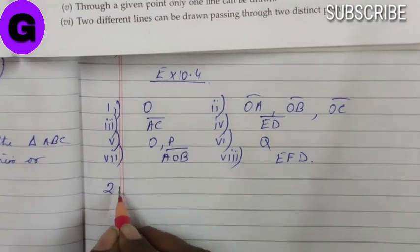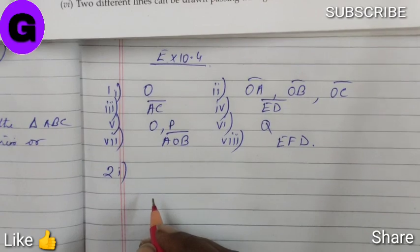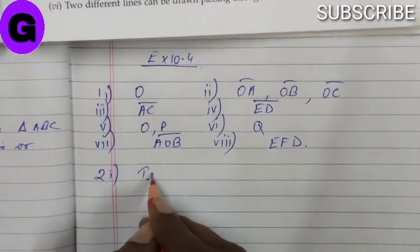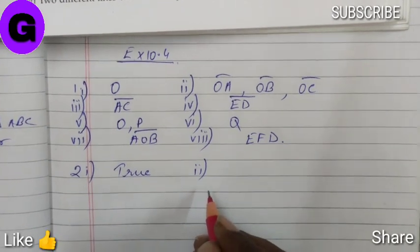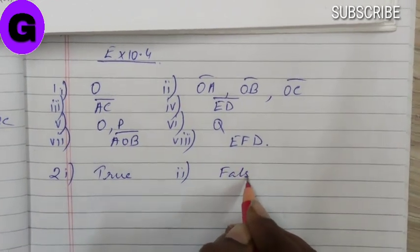Question number 2. True or false? 1. Every diameter of a circle is also a chord. True. 2. Every chord of a circle is also a diameter. False.